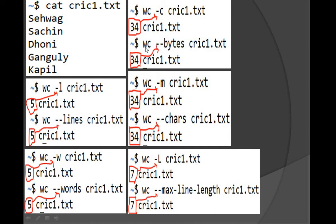We can also use wc --bytes filename. Here I used wc --bytes crick1.txt and we see the number of bytes followed by the file name. To summarize: for counting lines use -l or --lines; for words use -w or --words; for bytes use -c or --bytes. We can also use wc -m filename to return the number of characters in the file.